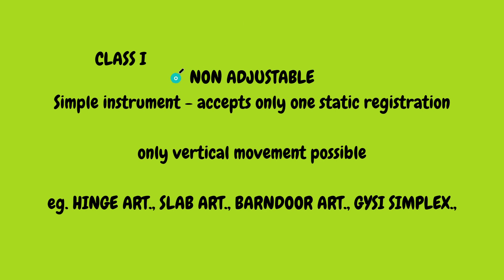Class 1 is a non-adjustable articulator. It is a simple instrument — nothing complicated about it. It accepts only one static registration and only vertical movement. Hinge articulator, slab articulator, barn door, and Geysi Simplex are examples of a class 1 articulator. As you see in this picture, it is a slab articulator.